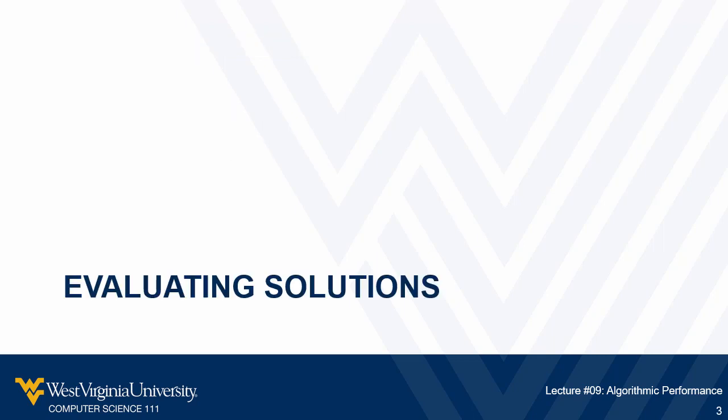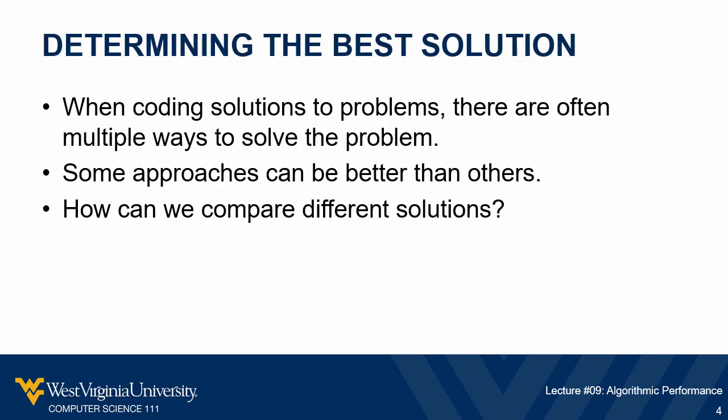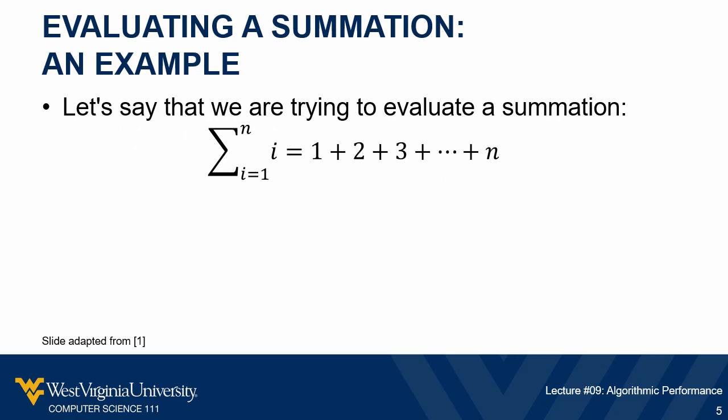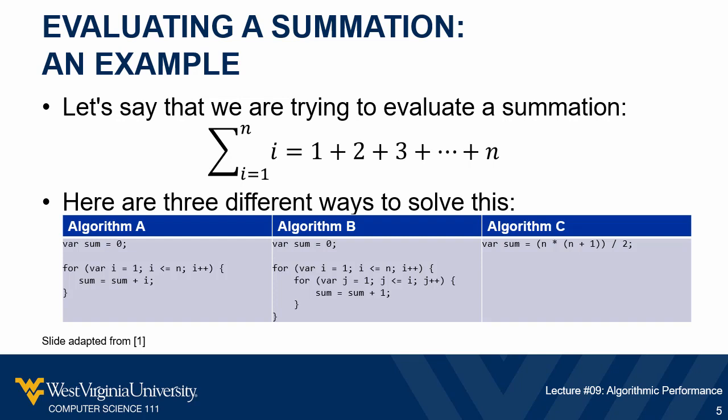When you're coding solutions to a problem, a lot of times there are multiple ways you can approach it. We've seen this with the array-based and node-based approaches to working with the bag abstract data type. With these different approaches, some of them are bound to be better than others. How can we compare different options to figure out what's going to be the best one to use? As an example, let's say we're trying to calculate a summation where we add all the integers from 1 through n. There are a couple of different ways we could approach this math problem in our code, and these different approaches have some different complexity — that's what we're going to take a look at here.